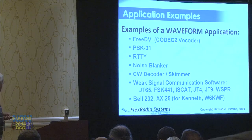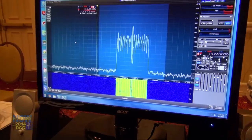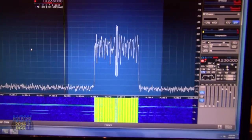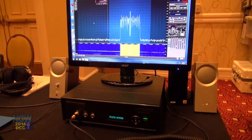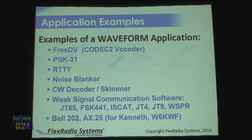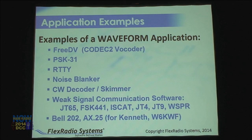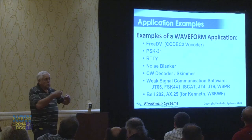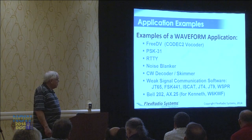Examples: FreeDV, Codec 2 — that is our first application, and we have it running in the next room. This source code is available on the GitHub repository that Steve talked about. The obvious ones are PSK31, RTTY, some kind of sophisticated noise blanker — noise means different things to different people. A CW decoder or skimmer could be plugged into the same interface, along with all the weak signal communication software, all of Joe Taylor's work. There's no way we want to make the investment to follow him, but we're going to give you a way to take his open source software and, with a wrapper, let it talk to the radio inside the radio.